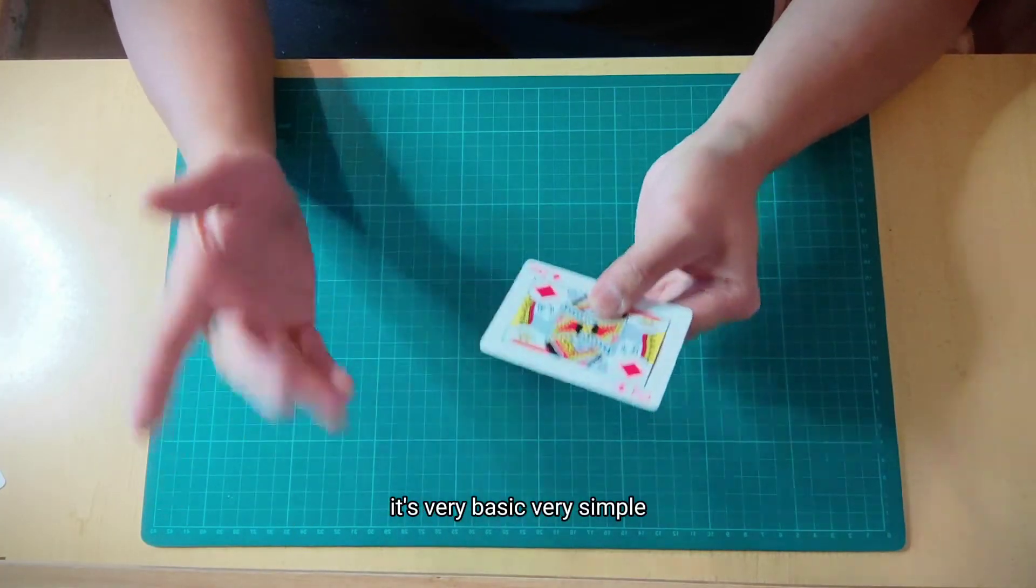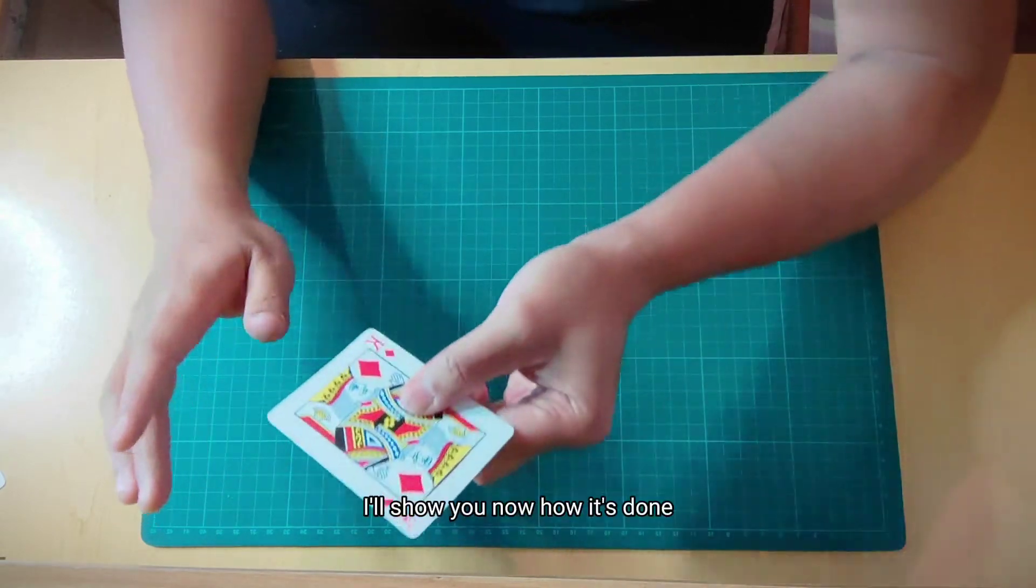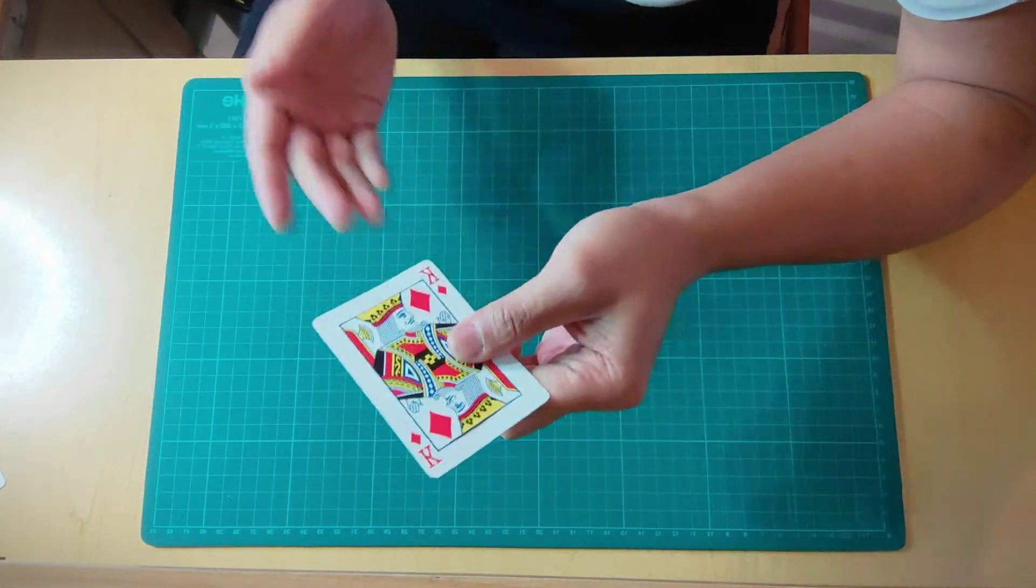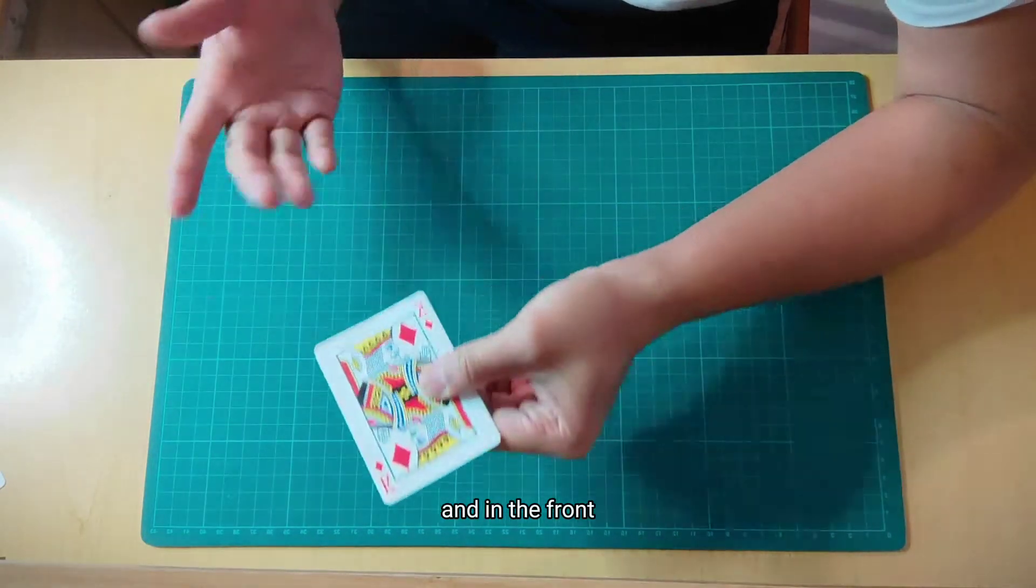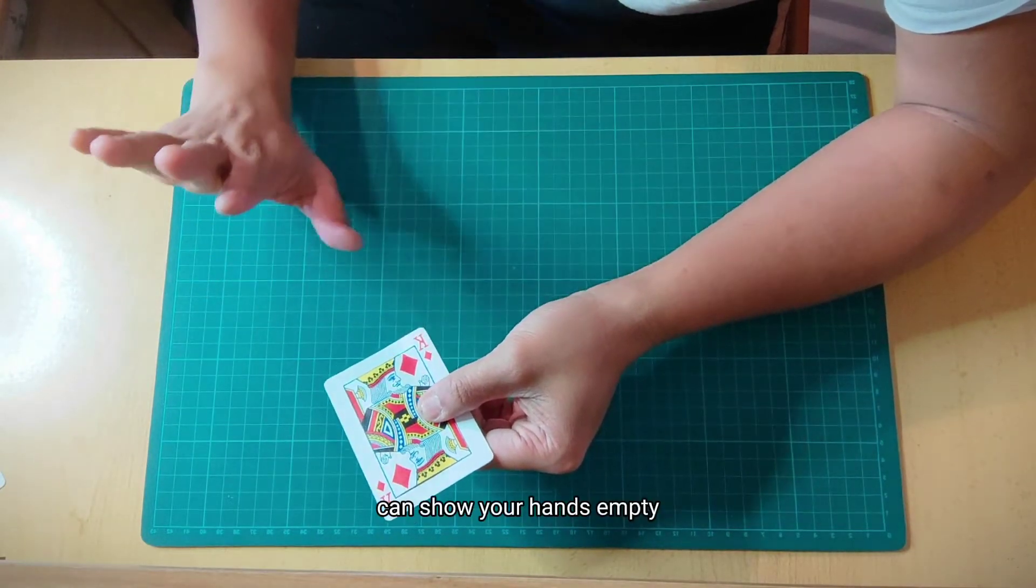So how to take the coin out? It's very basic, very simple. I'll show you now how it's done. So you can show the card from both sides, back and in the front. You can show your hands empty.